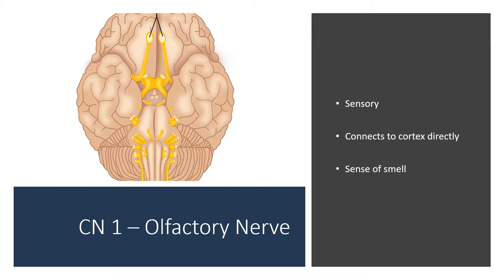Starting with cranial nerve 1, the olfactory nerve. It's involved in primarily sensory function. The olfactory system is unique in that it doesn't get relayed from the thalamus — it connects to the cortex directly and is involved in the sense of smell.